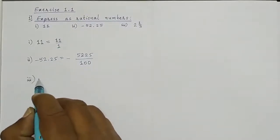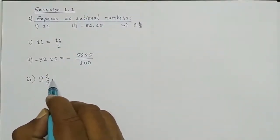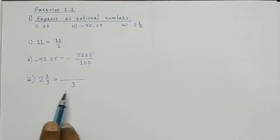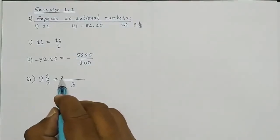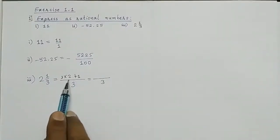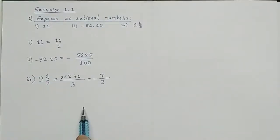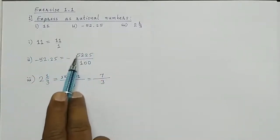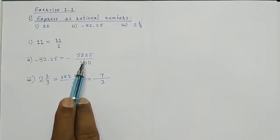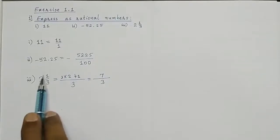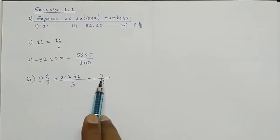Third sum: 2 and 1/3 (mixed fraction). We know how to make this into an improper fraction. We write the denominator as it is — 3. Then 3 into 2 plus 1: 3 twos are 6 plus 1 is 7, so 7 upon 3. First answer: 11 upon 1 (integer upon integer). Second answer: minus 5225 upon 100 (integer upon integer, negative rational number). Third: was in mixed fraction, written as 7 upon 3, which is a rational number — integer upon integer.